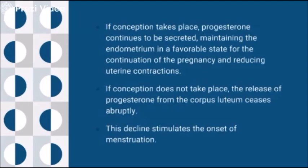If conception takes place, progesterone continues to be secreted because progesterone is needed to maintain the pregnancy. It is very important that progesterone must secrete continuously, maintaining the endometrium in a favorable state for the continuation of the pregnancy and reducing uterine contractions. If conception does not take place, the release of progesterone from the corpus luteum ceases. Conception is a kind of switch for the progesterone — if it is there, it continues; if it is not there, it stops. This decline stimulates the onset of menstruation. Switch off of the progesterone is switching on the menstruation.